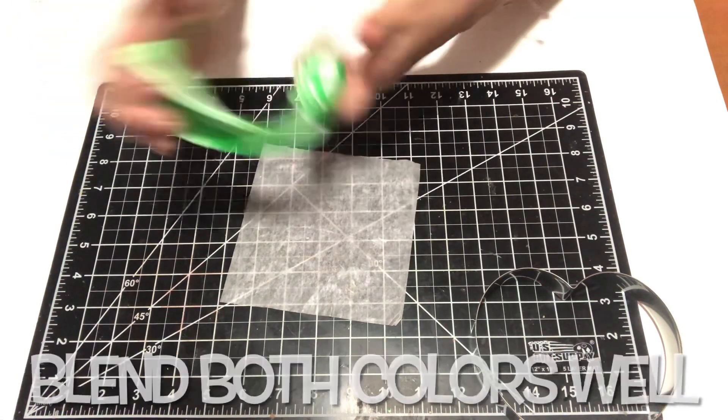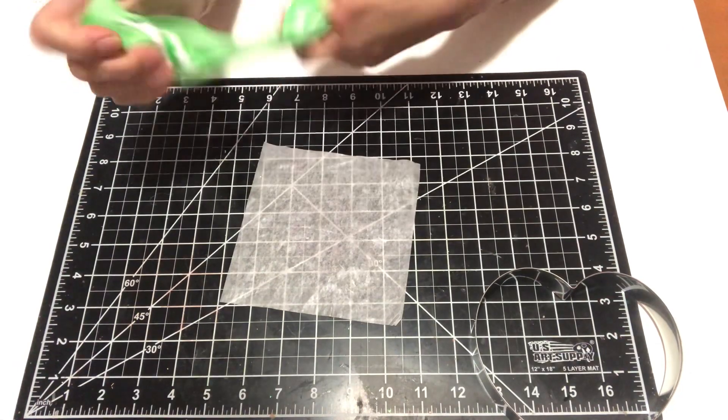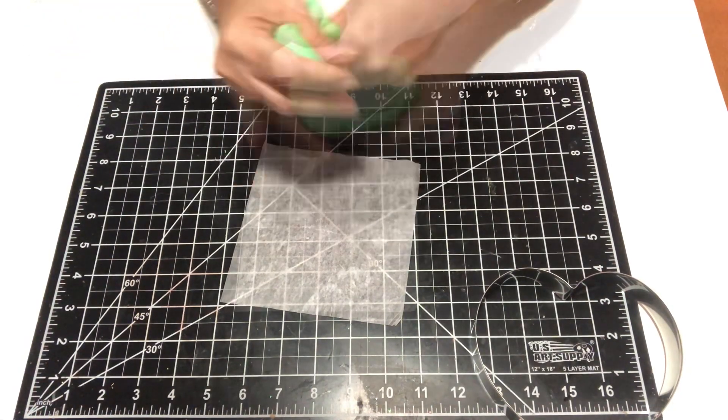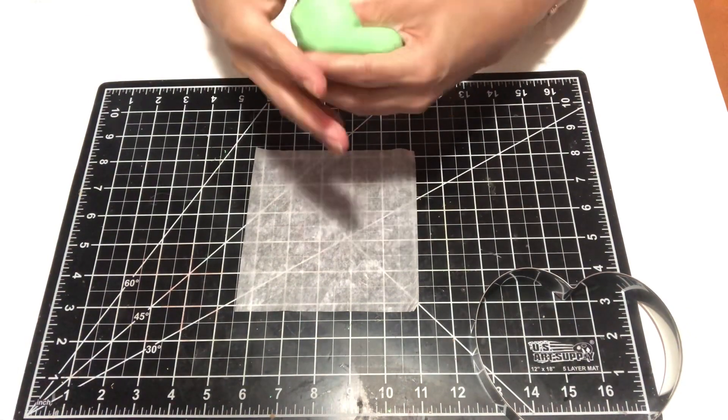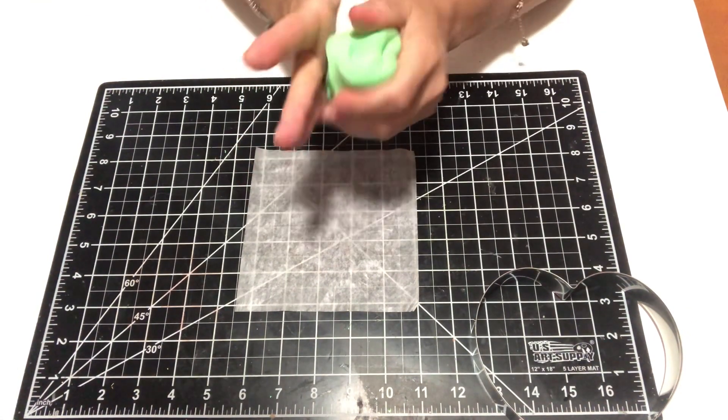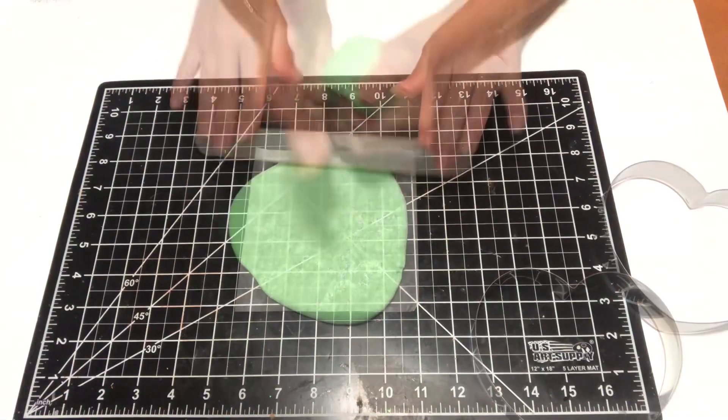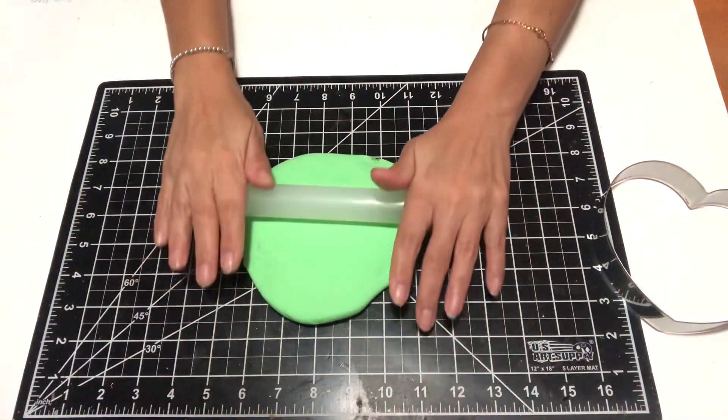So I am going to be using two different colors of foam clay and I want to make sure that they're very well blended. So once I have it all kneaded out, then I'm just going to go ahead and roll out my clay, then use the cookie cutter that I got from Hobby Lobby and cut my shape out.